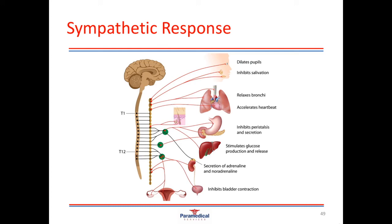During this sympathetic response, things like saliva secretion are inhibited — that's why you get a dry mouth when you start to get a bit nervous. Other functions such as digestion and peristalsis are inhibited so that we stop digesting food during times of action. On the activation side, the sympathetic response can cause pupil dilation so that the eyes can pick up as much information as possible and send that to the brain.